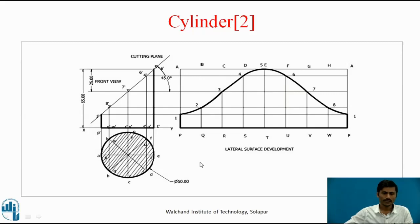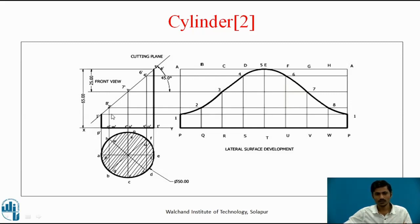Now we take one example. We are going to take a cylinder resting on HP with its base. We get the true shape of the circle in the top view on the HP plane, and in the VP plane we get the front view of the cylinder. Here the cylinder is taken as a truncated cylinder, meaning it is cut using a cutting plane inclined to HP at 45 degrees. The cutting plane passes through the axis 25 mm below the top surface. The total height of the cylinder is 65 mm, equal to the axis height.